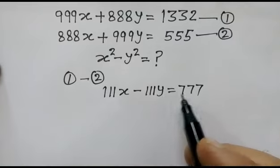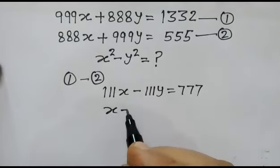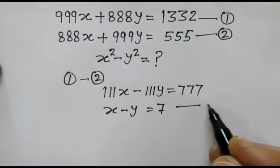If we divide the whole equation by 111, we get x minus y equals 7, equation number third.